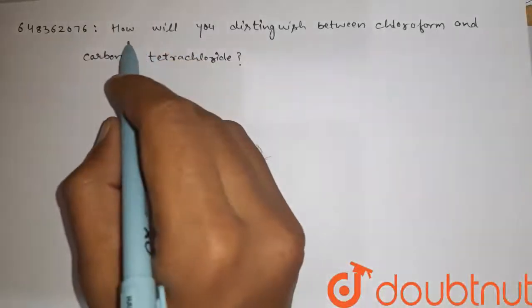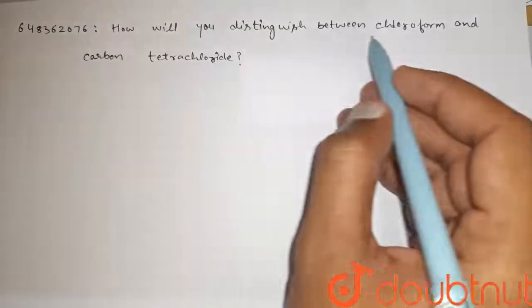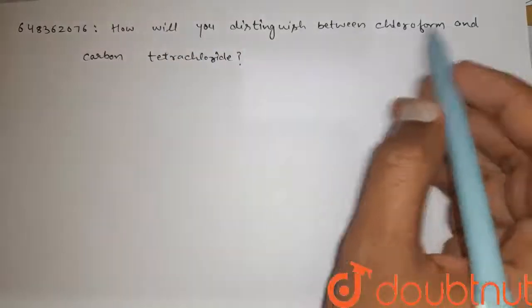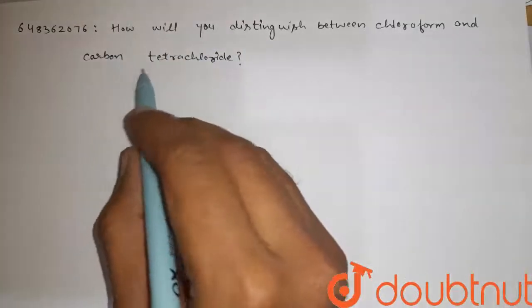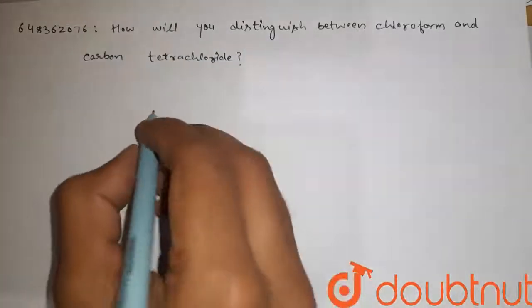Hi guys, here is the question: How will you distinguish between chloroform and carbon tetrachloride?